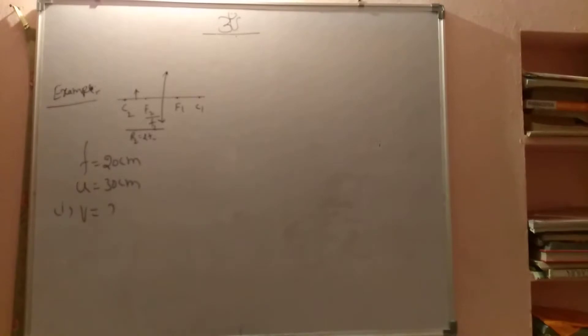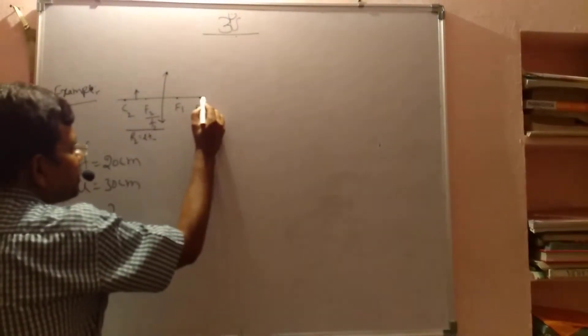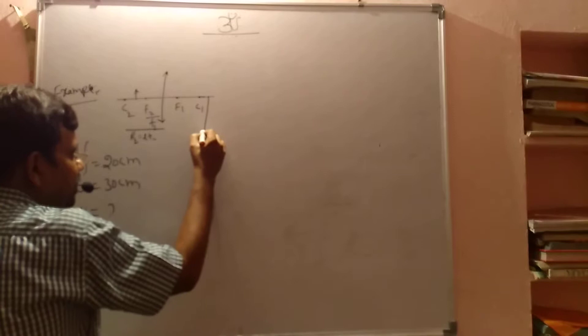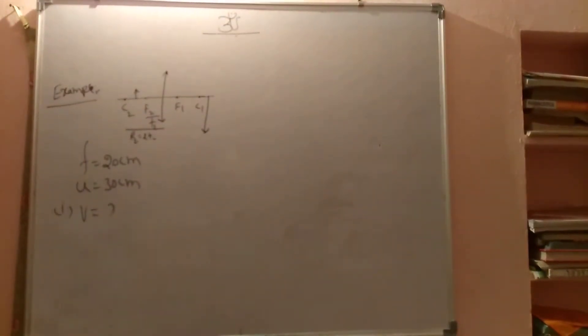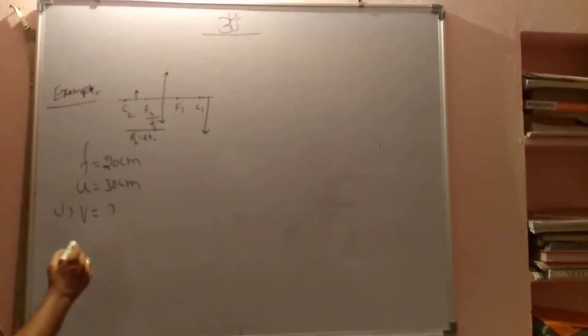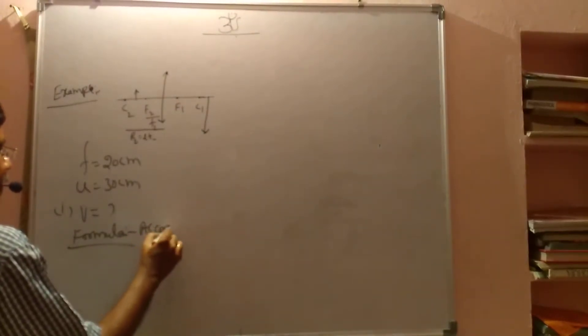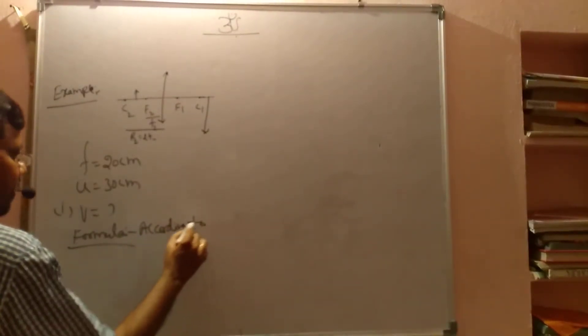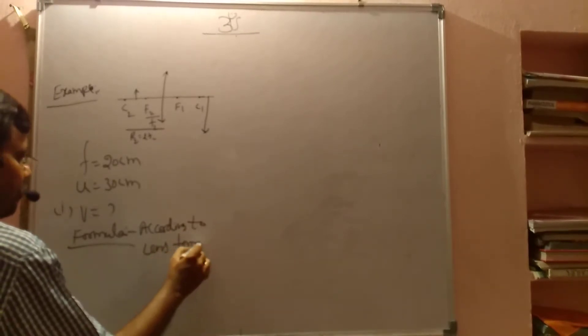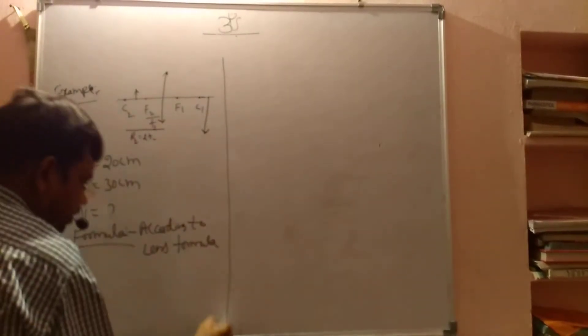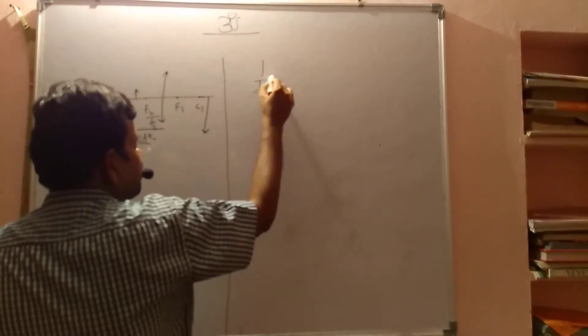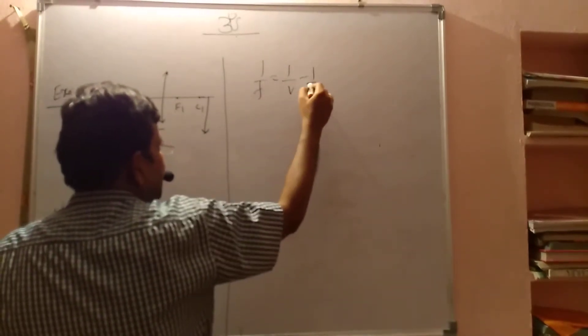If the object is in between F and C, we know the character of the image. Definitely image forming beyond the center of curvature—that is magnified image, inverted image, and also real image. Now you apply the lens formula. What is the lens formula? According to lens formula, 1 by F equals 1 by V minus 1 by U.